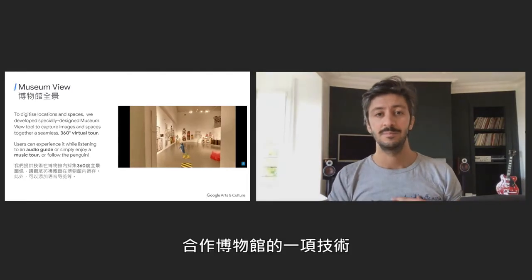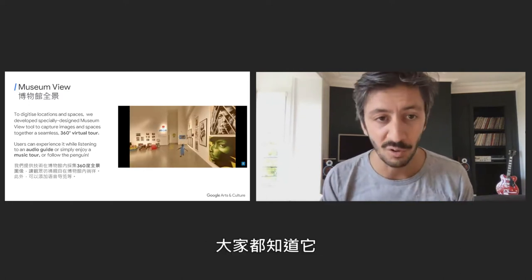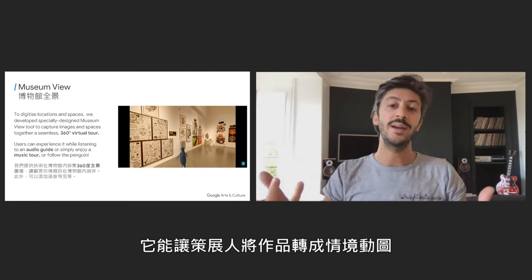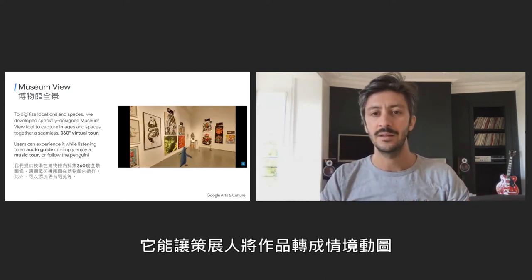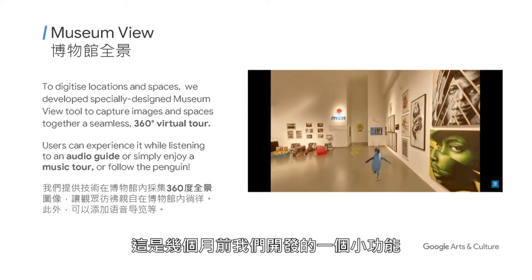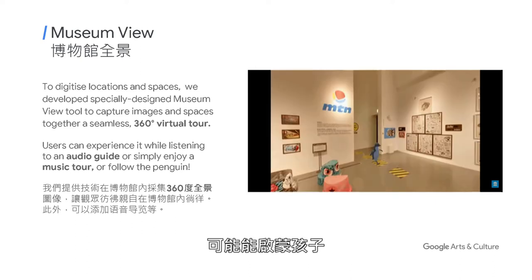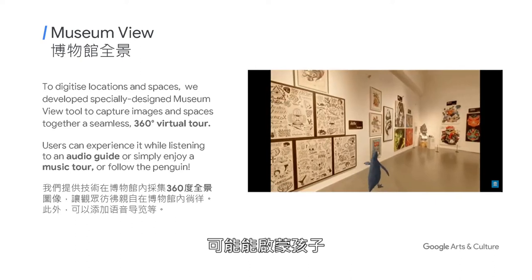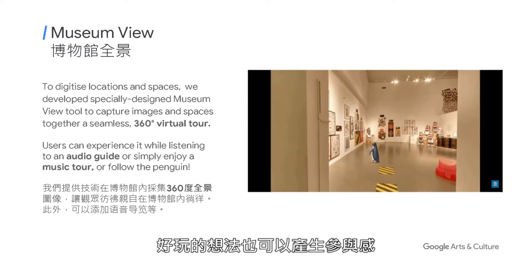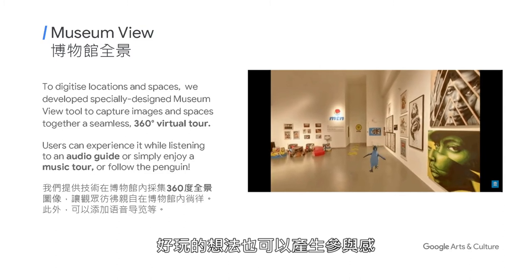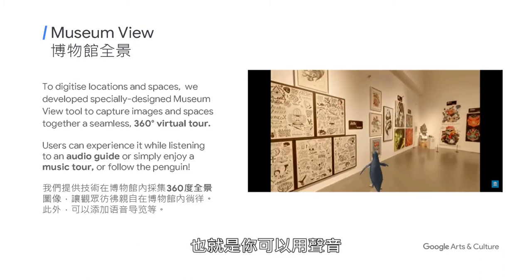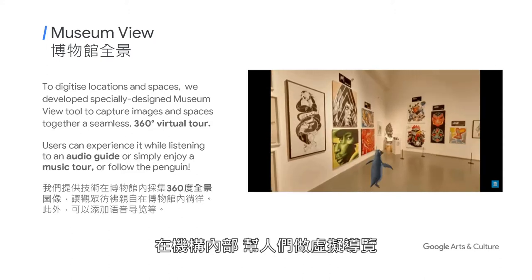This is another technology we give to our partner museums — it's called Street View, and you all know it. We adapted the technology for indoor captures inside museums, helping curators contextualize artwork in a scenography. You can actually see a penguin walking by — a little feature we added a few months back thinking it would create excitement for kids, and it actually does. The idea of these Street View tools is that you can turn them into a kind of audio guide for your museum, so if you add some voiceover, you can take people on a virtual tour inside institutions.